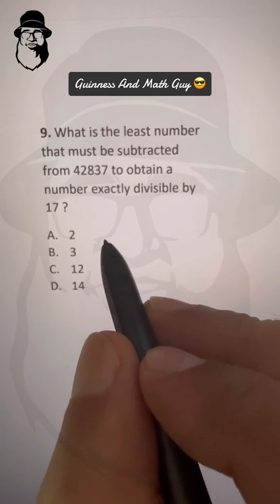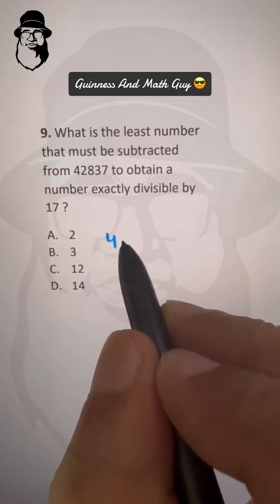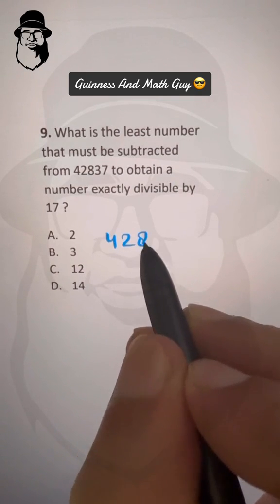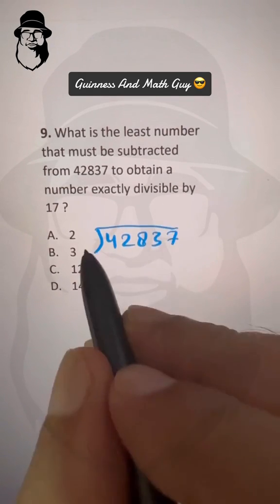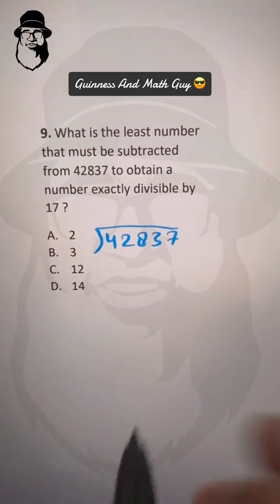So let's do long division: 42,837 divided by 17.